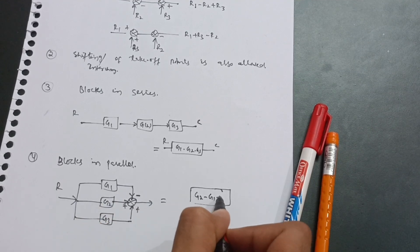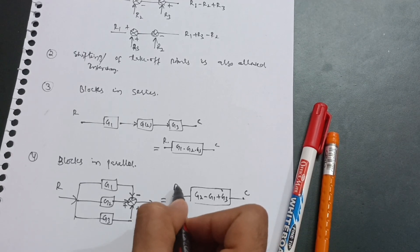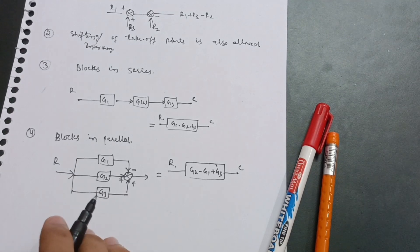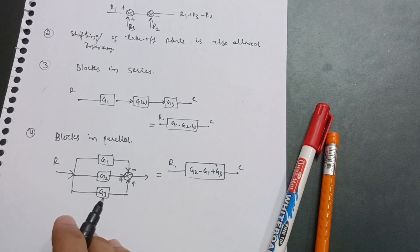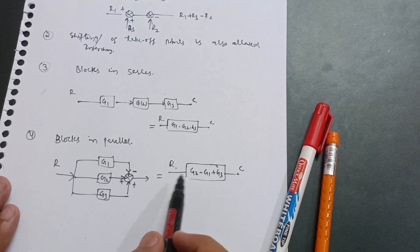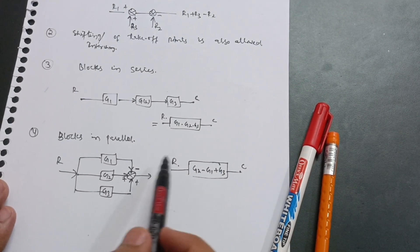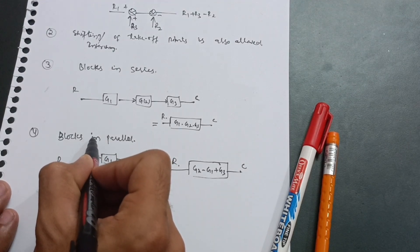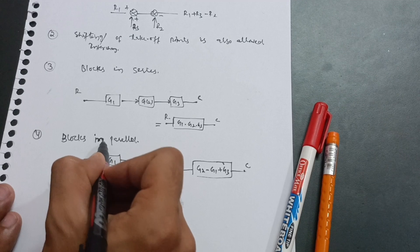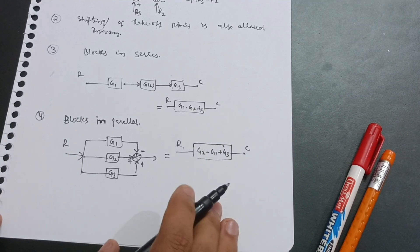G2 is positive and G3 is also positive, so I can write G2 minus G1 plus G3 — this is your desired output, this is your reference input. For blocks in parallel, you simply do addition or subtraction according to the feedback signs. Look at the feedbacks first, then write down the equivalent block accordingly.